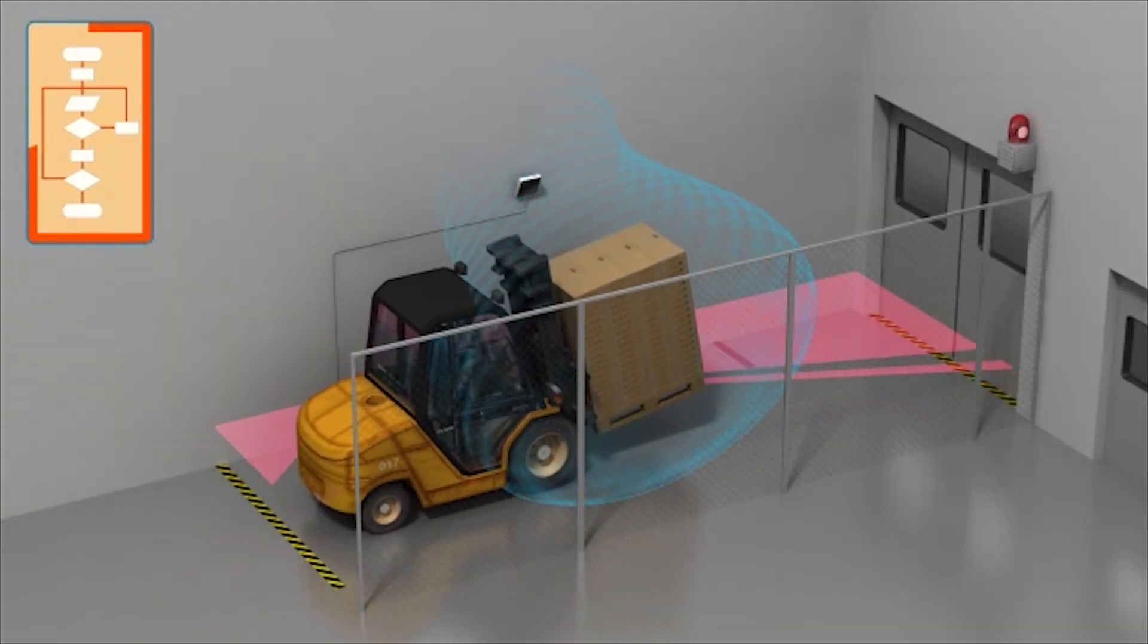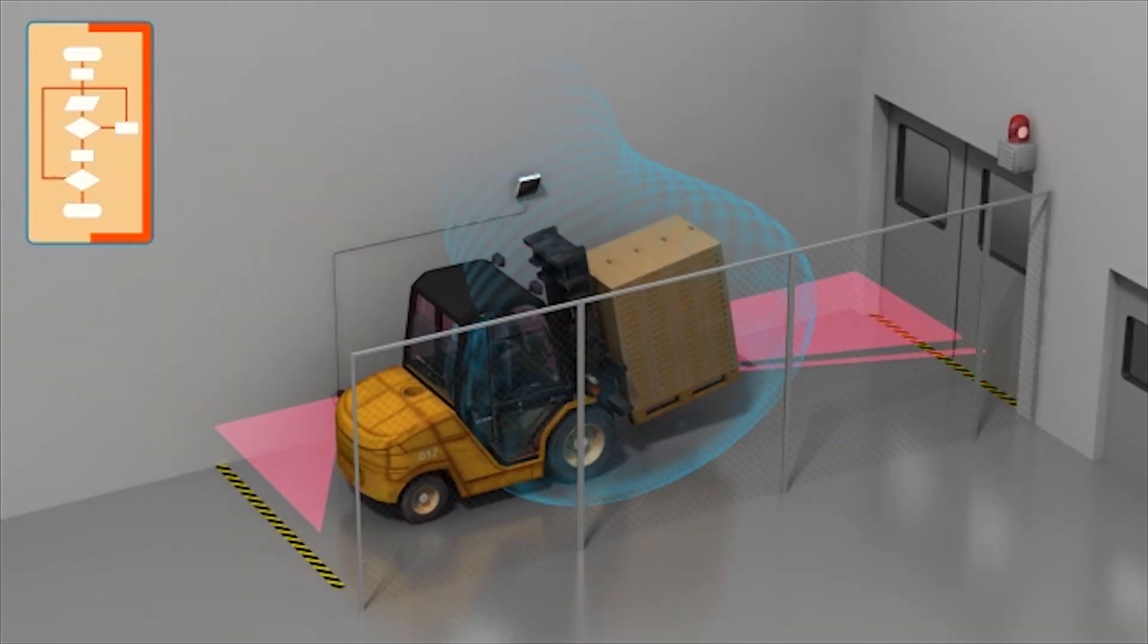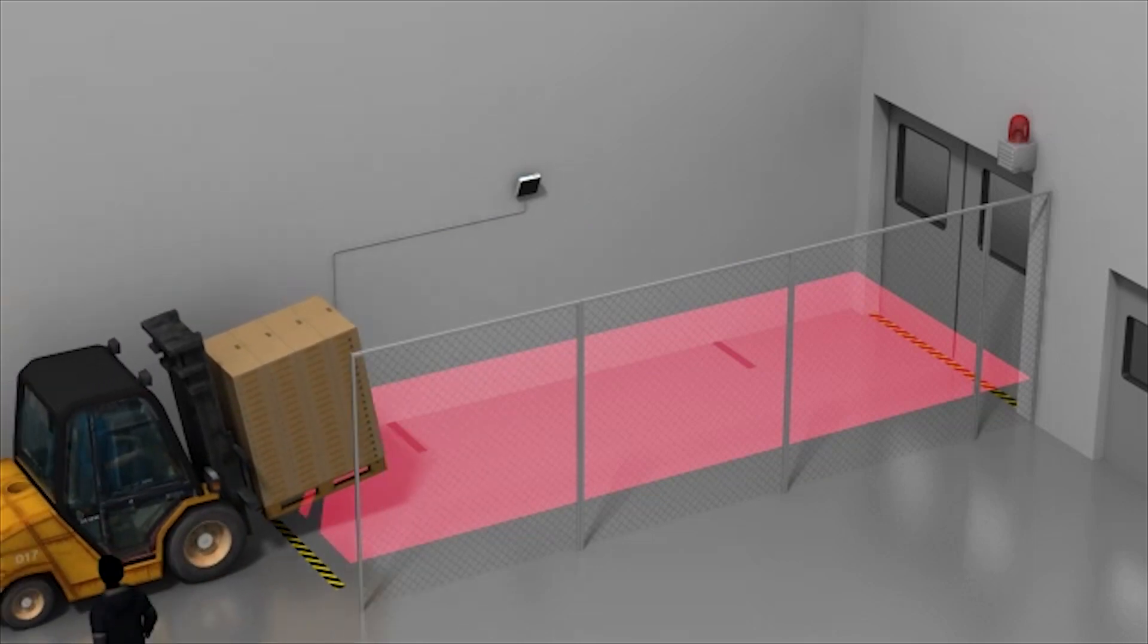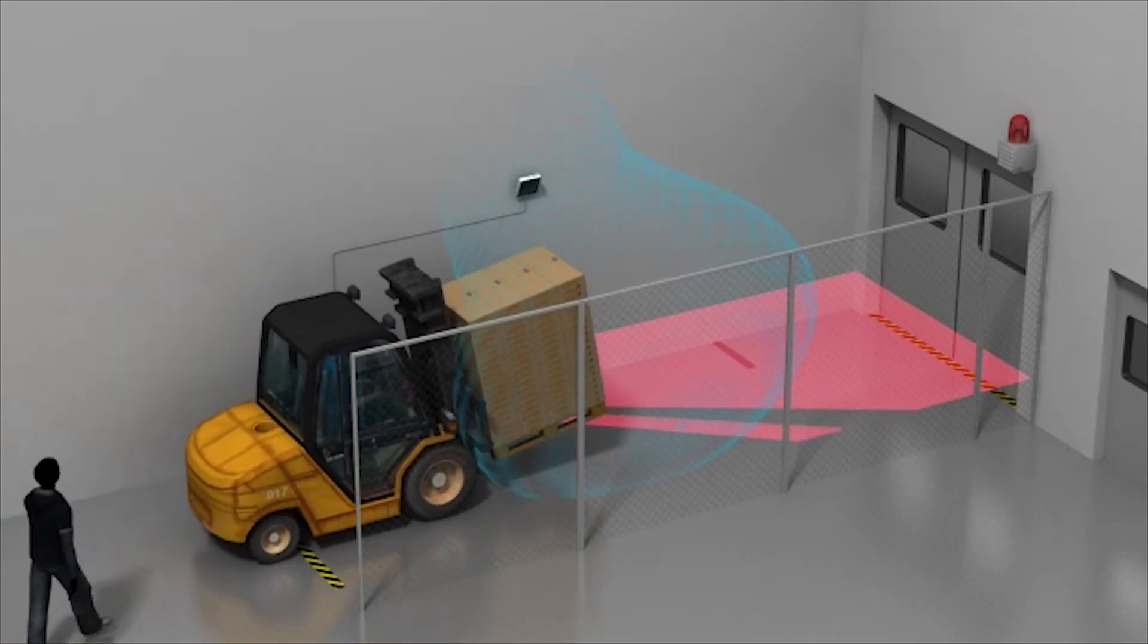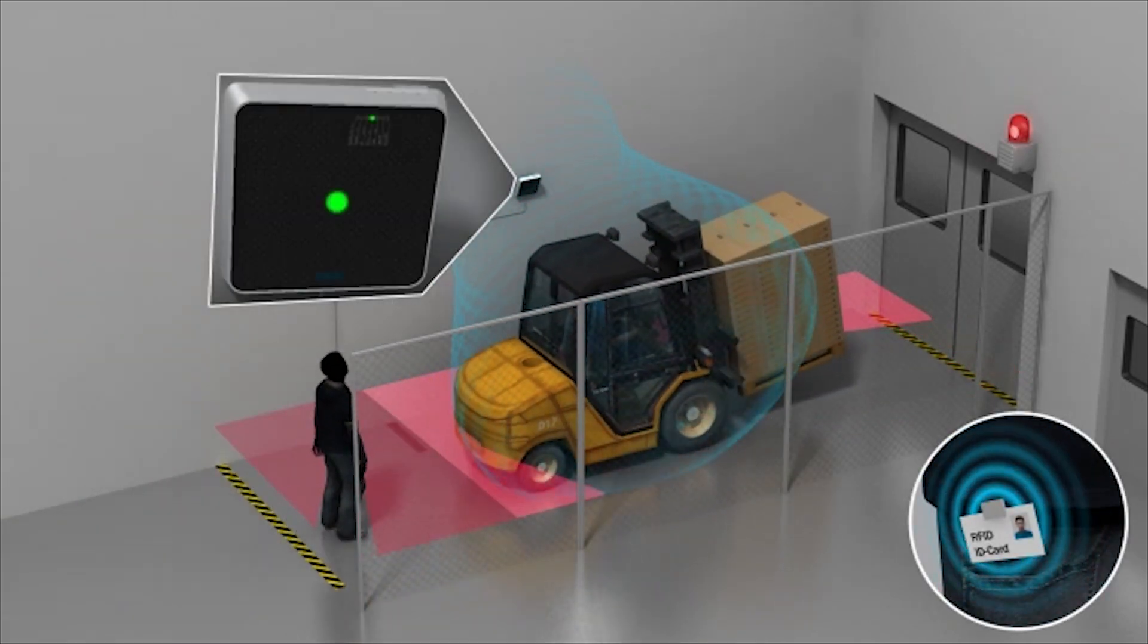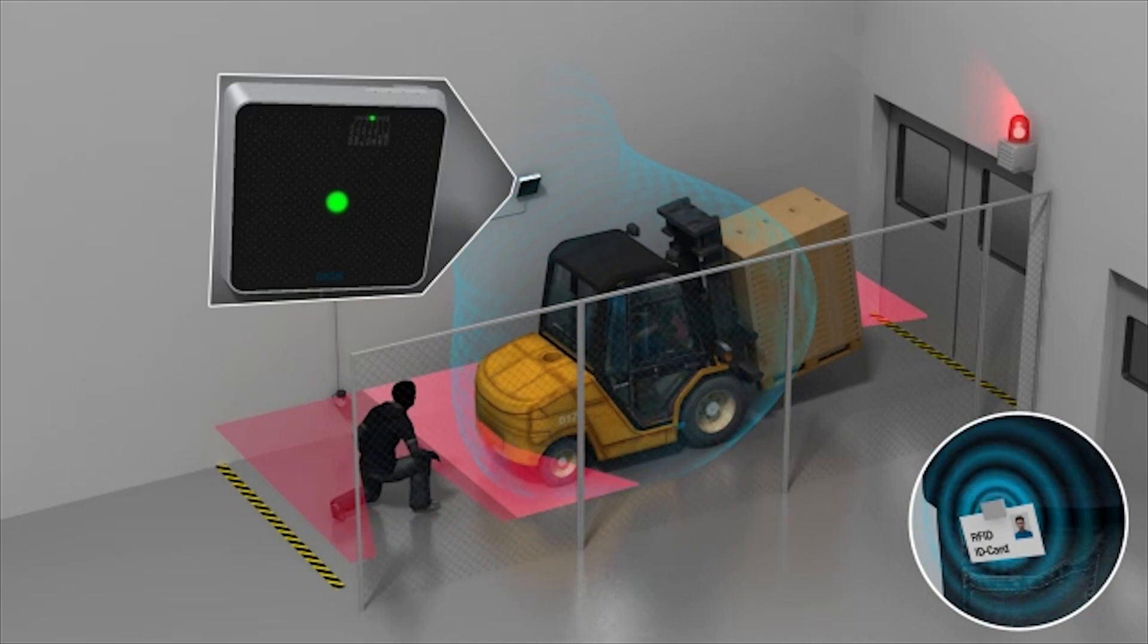With the help of intelligent filtering algorithms and plausibility functions, the LAC provides maximum protection against tampering. This ensures that only authorized persons can pass the access control point and that other persons cannot slip in undetected through an open gate, so-called tailgating.